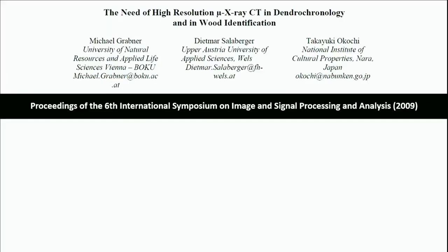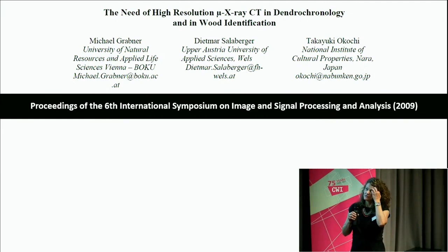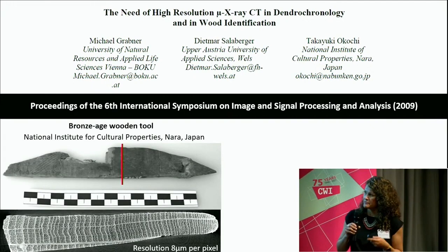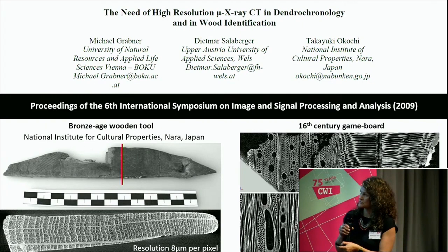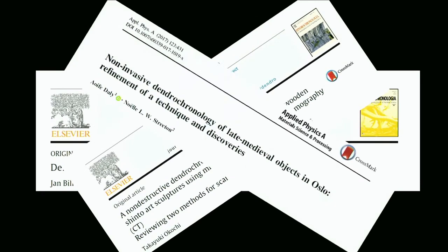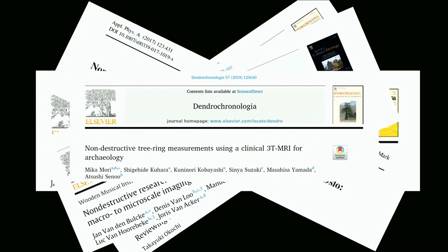That same year there was a paper very discreetly published in conference proceedings, but a very interesting one — already calling for the need for high-resolution micro X-ray CT in dendrochronology and wood identification, with fantastic images including a cross-section of a small object and wood structure for wood identification. I thought, wow, we are going somewhere — this is getting there. But the objects were very small, so it was a beginning. Since then, several papers came up over the past decade.